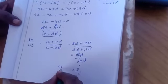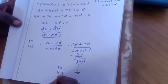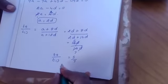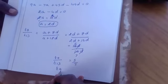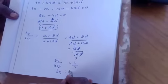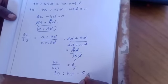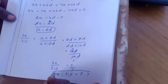That is T9 divided by T13 is 5 by 7. In ratio format, T9 is to T13 equal to 5 is to 7. That's all.